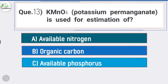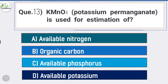Question number thirteen: potassium permanganate is used for the estimation of available nitrogen.